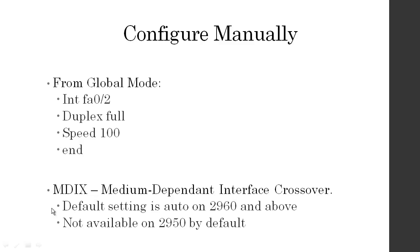MDIX — medium-dependent interface crossover — used to be a little switch you'd hit to cross wires over. By default on the 2960 and above switches, that's set to on, so it'll cross over for you and you can go from switch to switch with a straight-through cable. It was not available on the 2950, so connecting a 2950 to another 2950 requires a crossover cable. On 2960s and above, straight-through cables work because it automatically switches them for you.